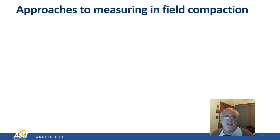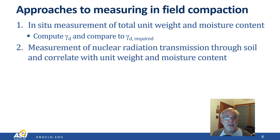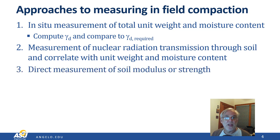Now that we understand relative compaction and how requirements are generally specified, let's discuss the approaches to making field measurements of compaction. There are three basic approaches. The first is to directly measure the total unit weight and moisture content after the soil has been compacted in the field. With these measurements, we can compute the dry unit weight and compare it to the dry unit weight required by the appropriate specification. A second method is to measure how much nuclear radiation is transmitted through the soil, using correlations to determine both the water content and unit weight. Finally, we can directly measure either the soil modulus or strength in the field. These are the two properties we're really most interested in, so it would make sense to measure them directly rather than use dry unit weight as a proxy.